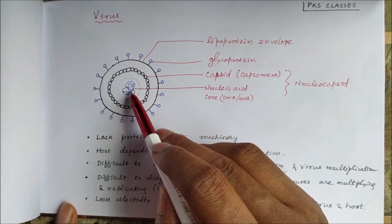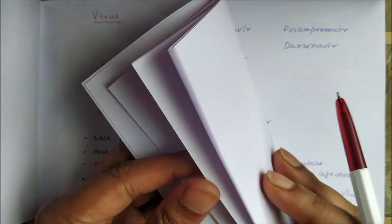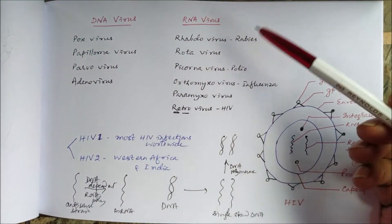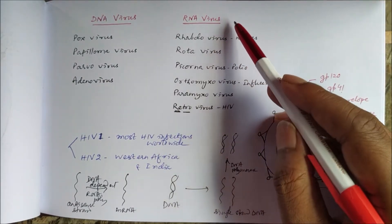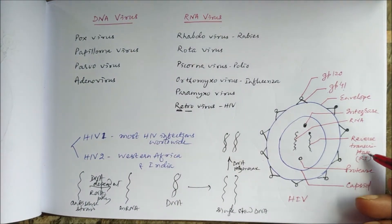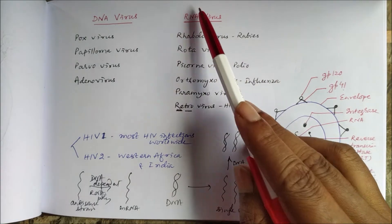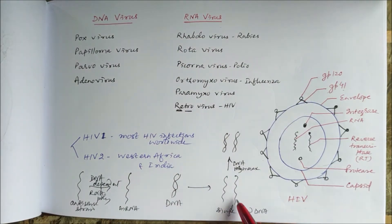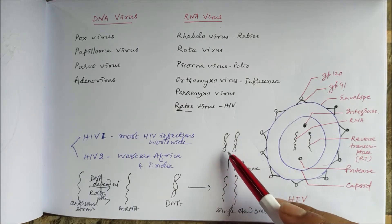Based on the nucleic acid core, whether DNA or RNA, we have two types: DNA virus and RNA virus. A special type of RNA virus called retrovirus also exists, which has reverse transcriptase because it undergoes reverse transcription — from RNA to DNA. In normal DNA replication, there is negative supercoiling of DNA to produce two single strands, which by the action of DNA-dependent RNA polymerase are converted to new DNA.